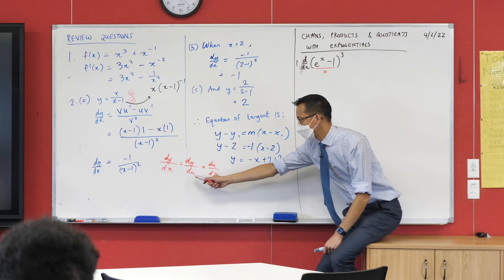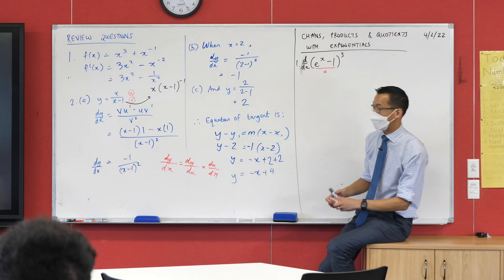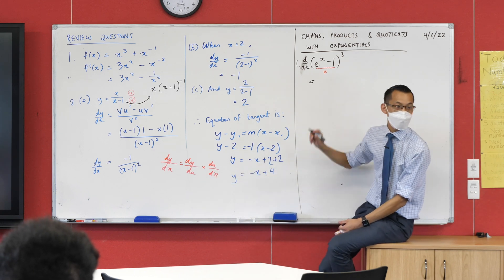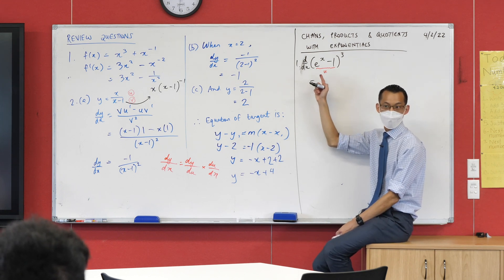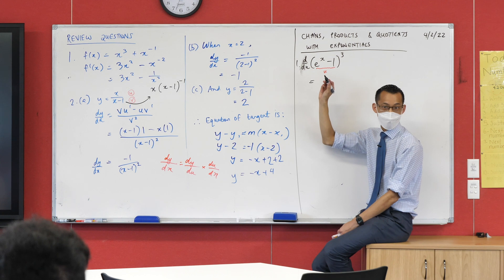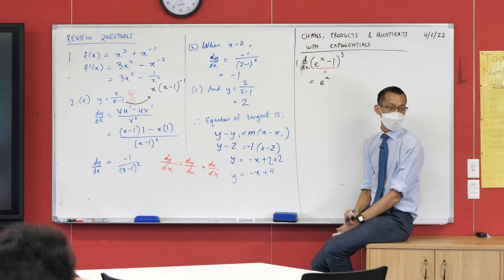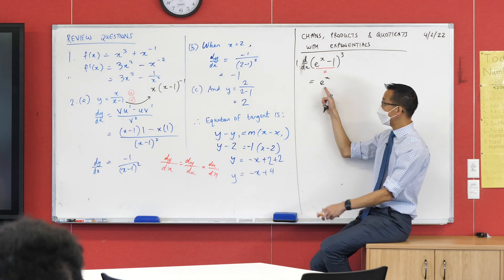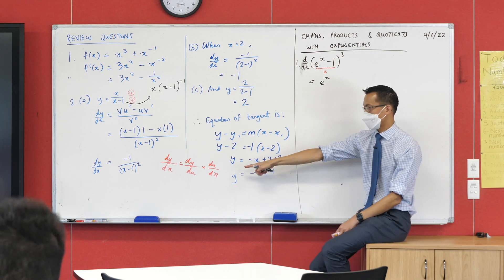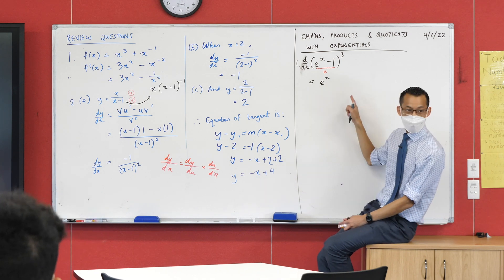So this would be my u. However, we don't need to say that it is, because all we're going to do is differentiate that thing with respect to x, which I actually think you guys already know how to do. What is the derivative of this inside bit? The derivative of e to the x is e to the x, and the derivative of negative one is zero, so I can just leave it.